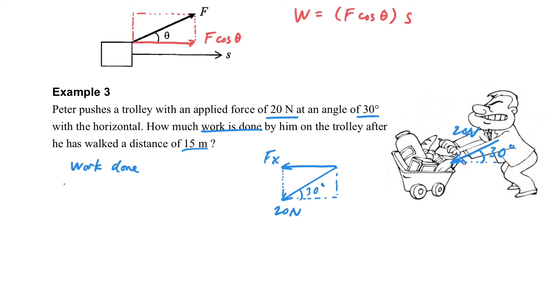So the work done can be found by W equals F, and F here is just the horizontal one. So it's 20 cosine 30 times 15. This is the way for us to find the work done.